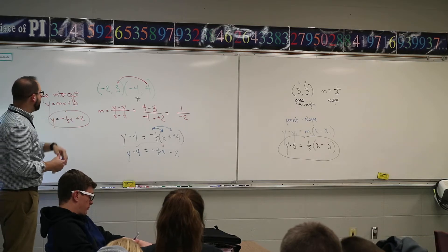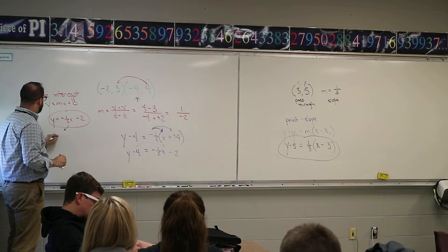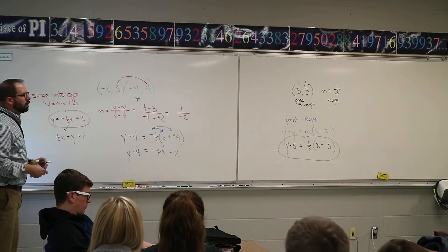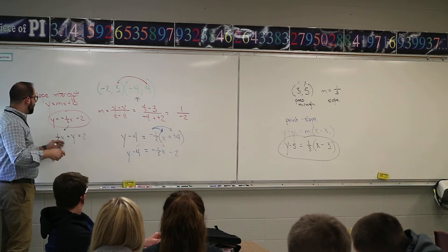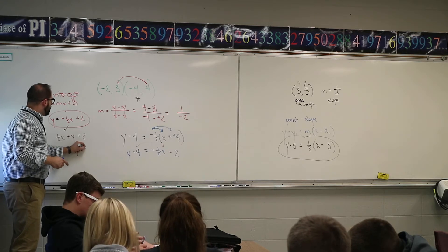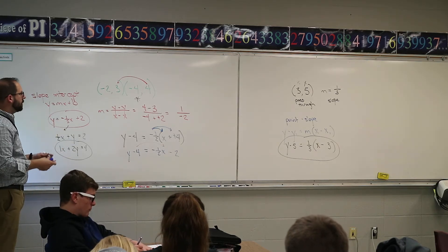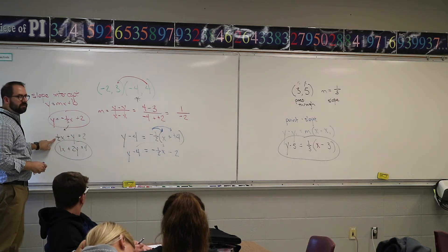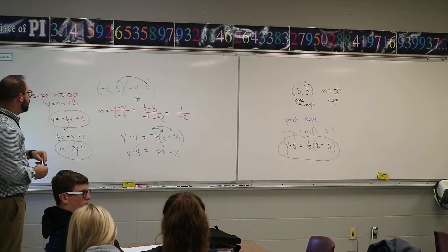If they want standard form instead, move the x-term over: one-half x plus y equals two. Since standard form can't have fractions, multiply everything by two: x plus 2y equals four. For general form, subtract four: x plus 2y minus 4 equals zero. The trick is — once you have the fraction over, multiply by the denominator to clear it. If there are decimals, multiply by whatever you need to eliminate them.